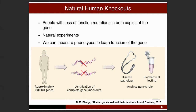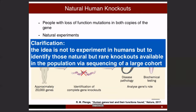If a human has about 20,000 genes, the idea of this project is to collect maybe 100,000 individuals, sequence them, and identify the few — typically a handful — of individuals that are complete gene knockouts for each gene. Then we look at their medical records and phenotypes to understand the consequence of that gene loss.